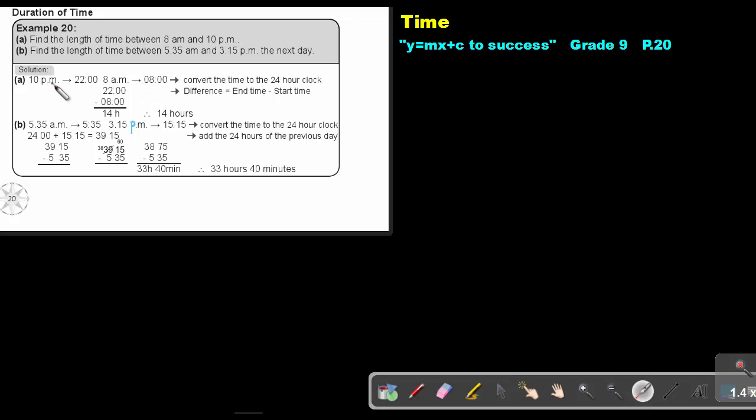So remember, if it's pm, I add 12, so it's 22. If it's am, it stays the same. So I take that two values and I subtract. And then 8 from 22 will be 14, and that will be 14 hours.